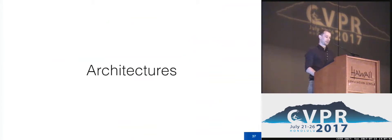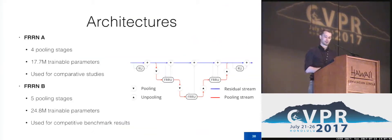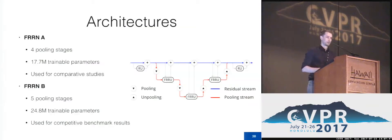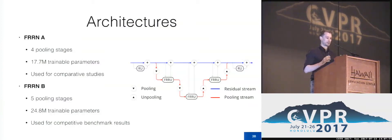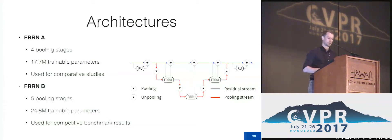In our paper, we use two network architectures that both follow the same schematic. One is FRN-A, standing for full-resolution residual network A, and one is FRN-B. FRN-A has four pooling stages and FRN-B has five pooling stages. We use FRN-A mainly for comparative studies throughout the paper, whereas FRN-B delivers the benchmark performance shown later in the talk.